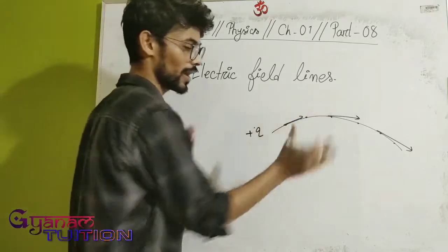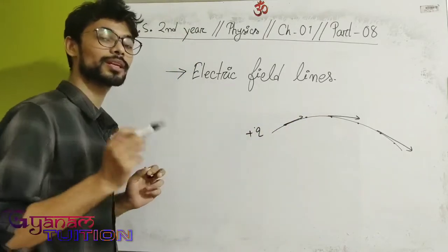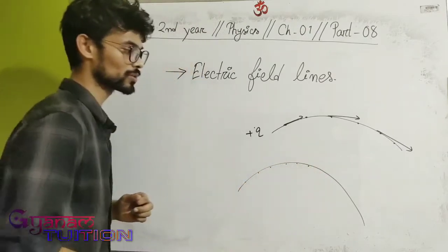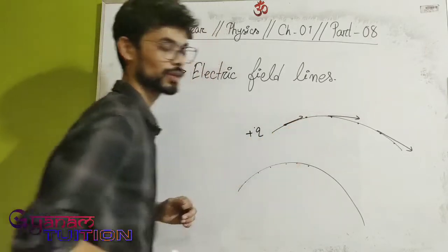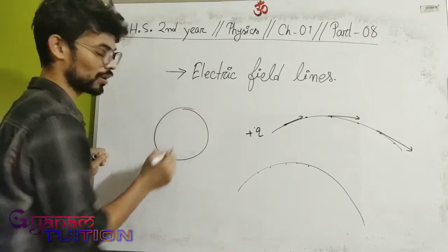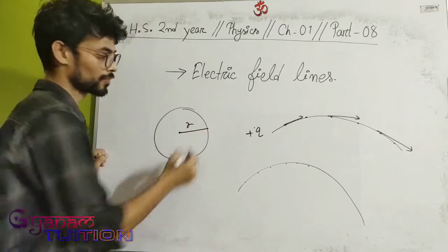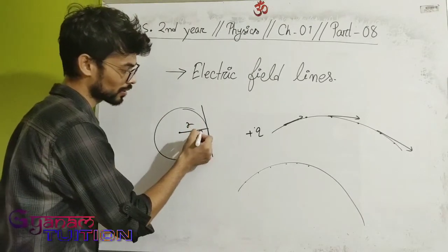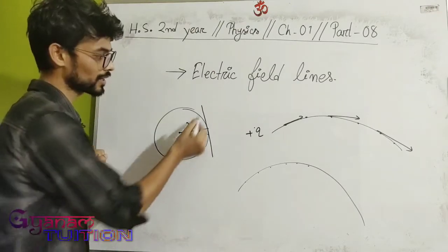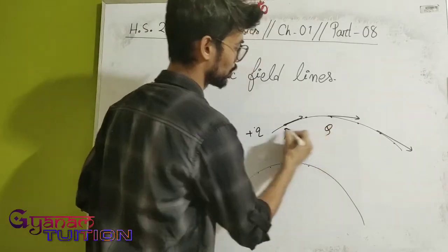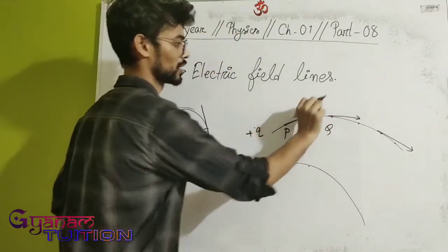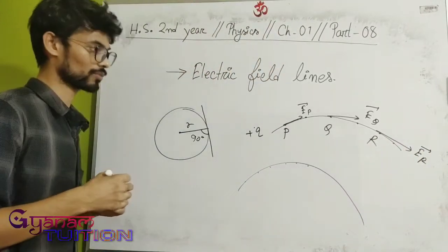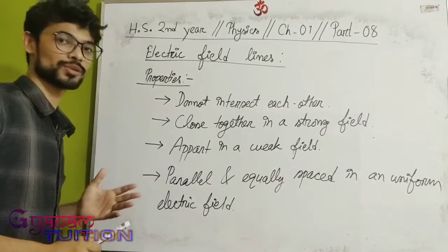The basic property of electric field lines is this: at any point P or Q along an electric field line, the tangent drawn at that point gives the direction of the electric field vector (E vector) at that point. The tangent is perpendicular to the radius, making a 90-degree angle with it.